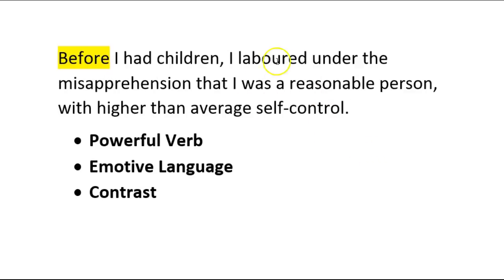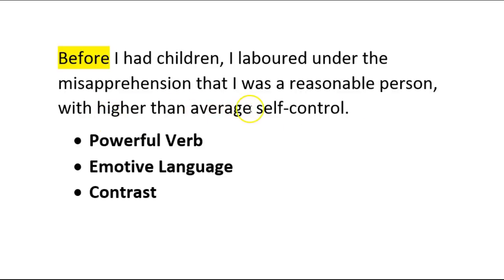But then we have another triplet kind of sentence divided into three parts — you can see with the two commas. 'Before I had children, I labored under the misapprehension that I was a reasonable person.' So this is a contrast from before to now, and it uses a powerful verb in 'labored'. And of course that is an emotive word as well, and so is the word 'reasonable' — she hoped she was reasonable, but now she realises that she wasn't. You could argue that 'higher than average' is also emotive in the sense that it was a positive notion — she thought she was better than the average human being, but now that is a contrast and she realises she's probably worse.